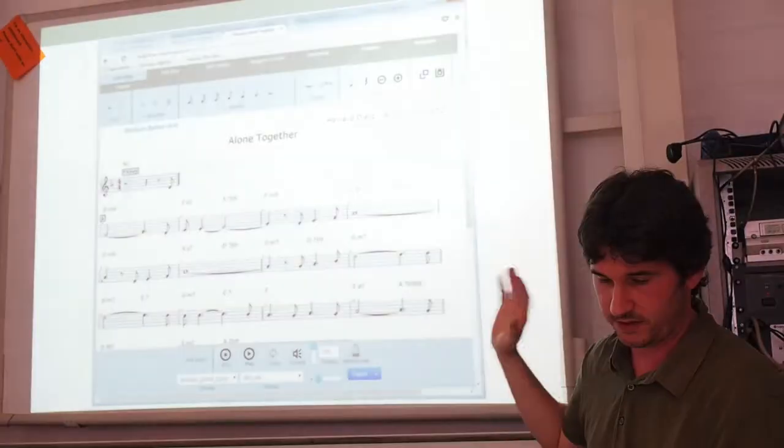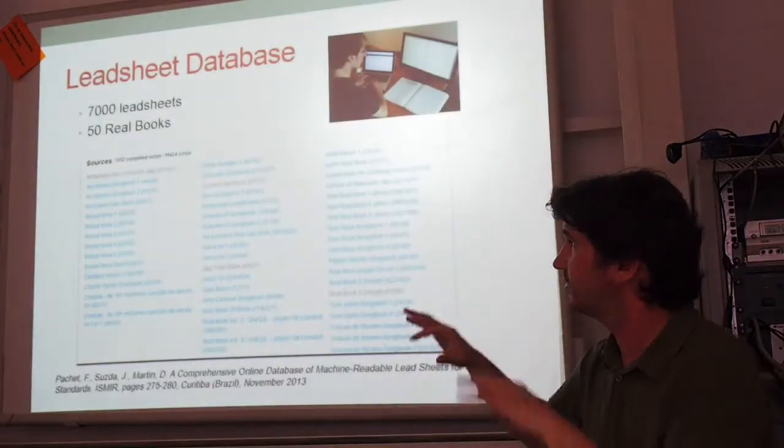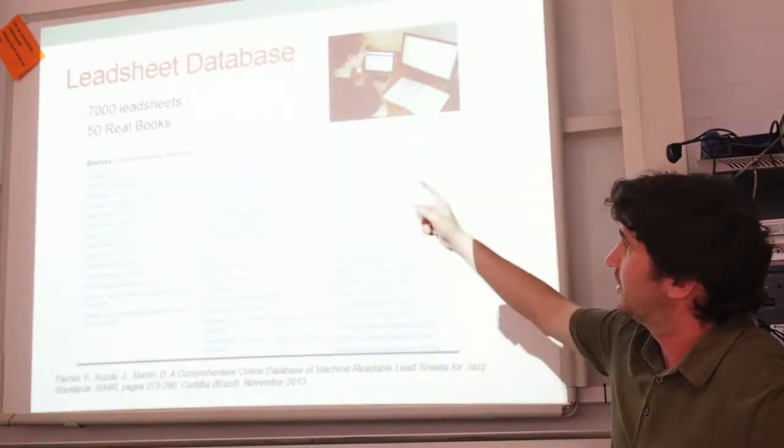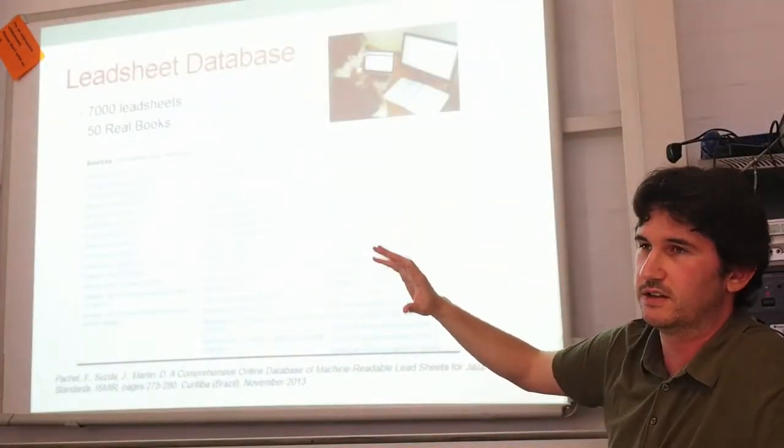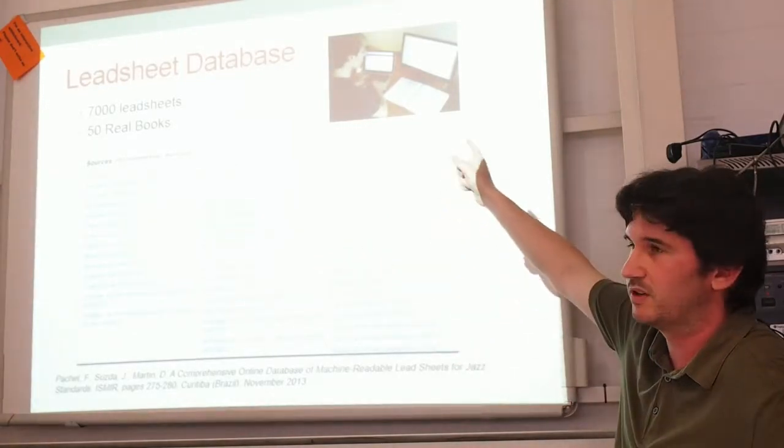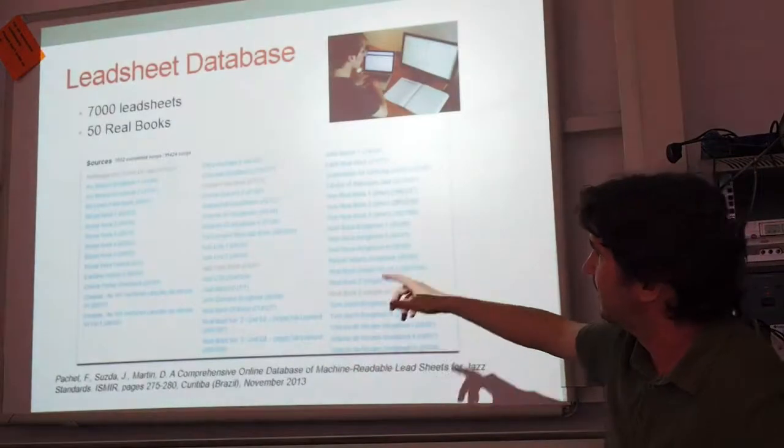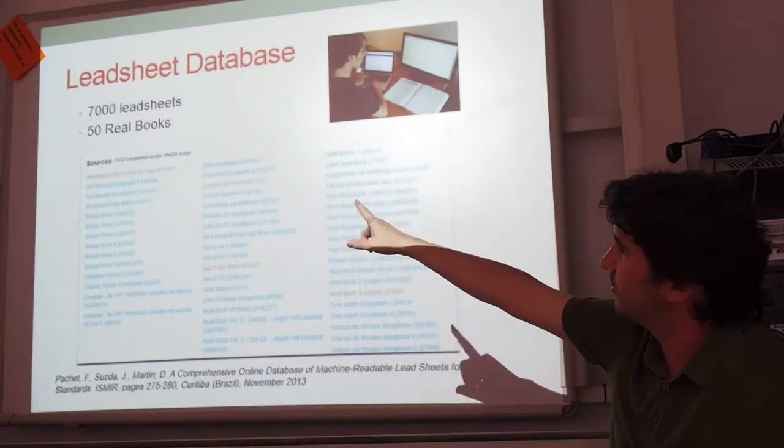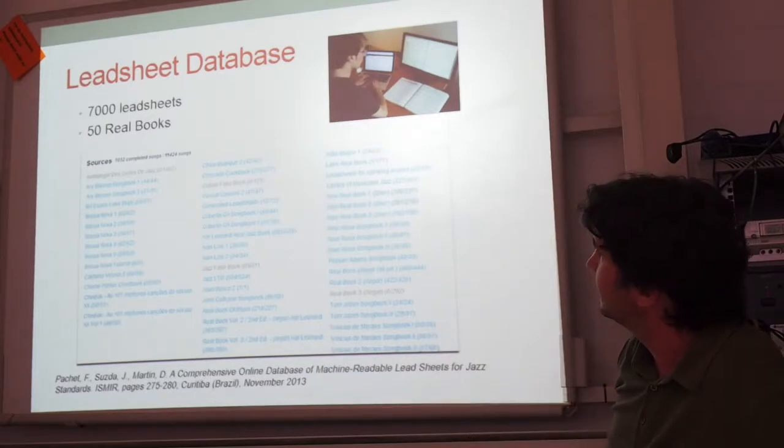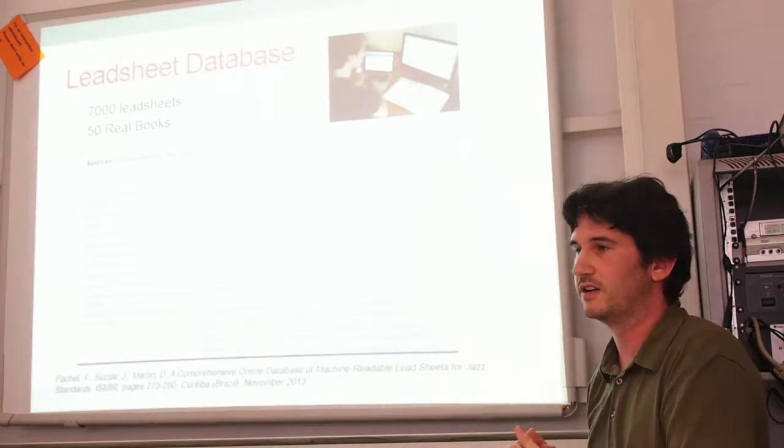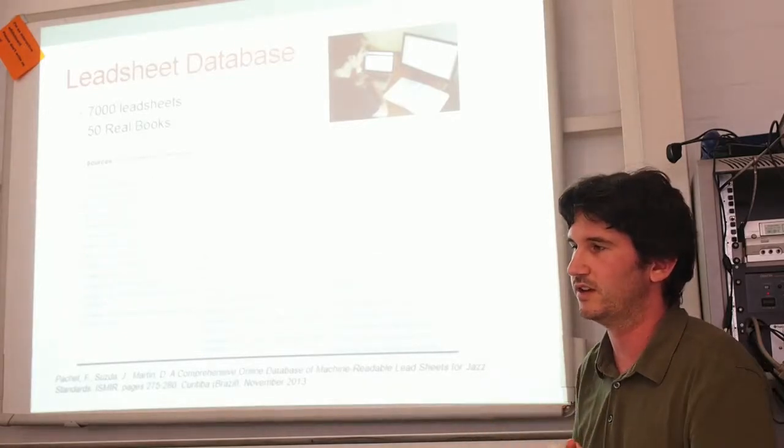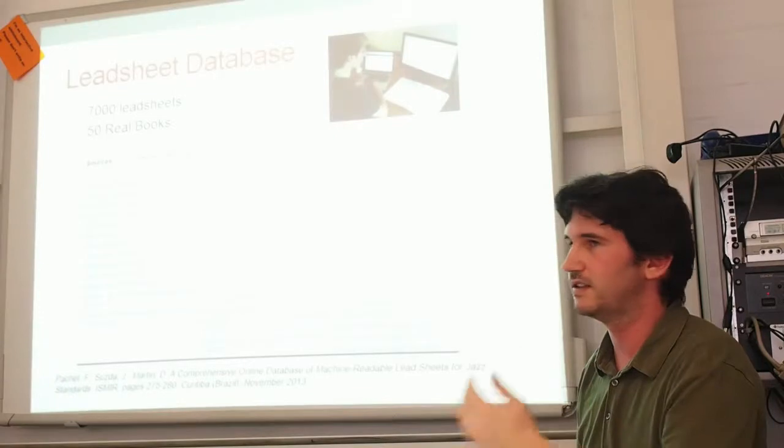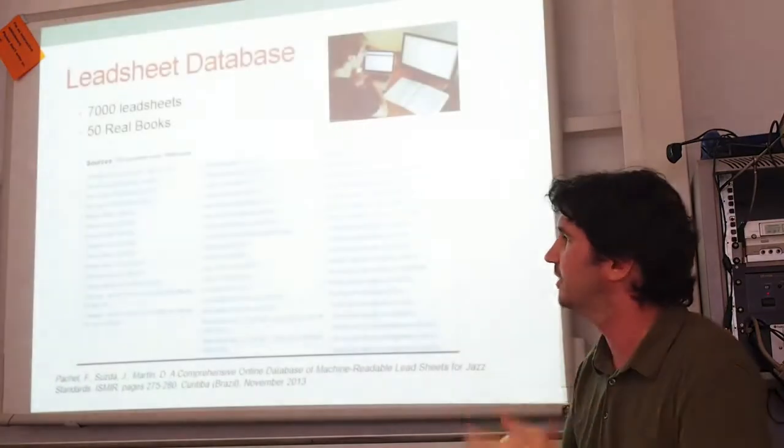And so thanks to the lead sheet editor, we could achieve the two goals we were talking about. The first one is we have the lead sheet database for the Flow Machines project. We have asked some users, some musicians to enter the content. So we can see an example of Jeff here that was entering a song. So we have now 7,000 lead sheets and 15 real books. So this is the data for the Flow Machines project. And we are starting to make a radio which generates songs in the style of Miles Davis or Charlie Parker or many different composers.